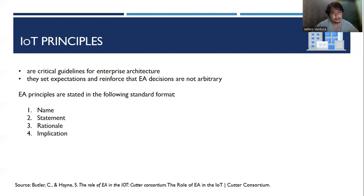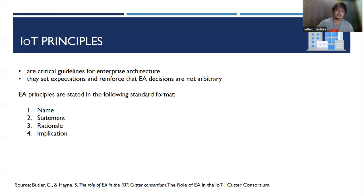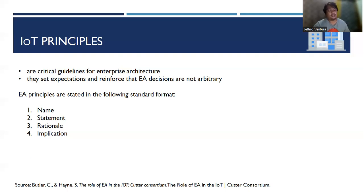These are examples of EA principles stated in standard format. First is the name, which establishes the essence of the rule and consistent identification. Then the statement, which unambiguously communicates the fundamental rule. The rationale describes the business benefits of adhering to the principle using business terminology. And the implication highlights requirements — both for business and IT — for carrying out the principle in terms of resources, cost, and activities or tasks.